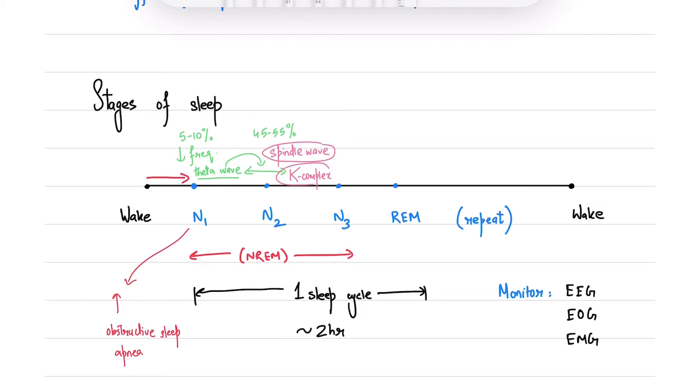N3 is what you call deep sleep. You'll see low frequency, high amplitude delta waves in the EEG, constituting 20% of the sleep. N3 keeps decreasing in duration as the night progresses, with the maximum duration in the first sleep cycle.